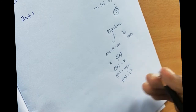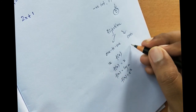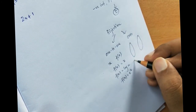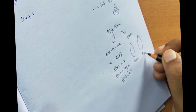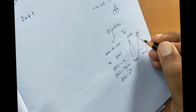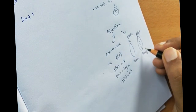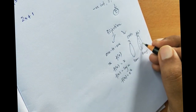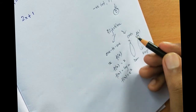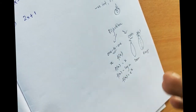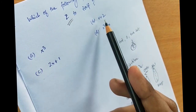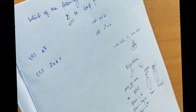An onto function means every element in the range has been mapped — there is no element in the codomain that is left unmapped. The four options to check are x³, x+2, 2x+1, and x²+x.